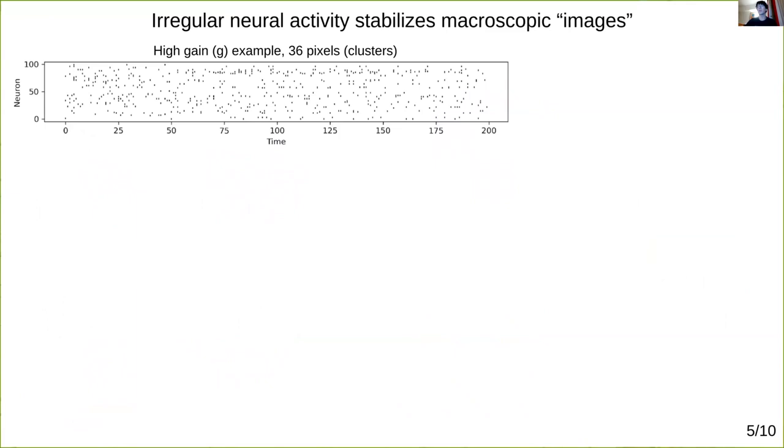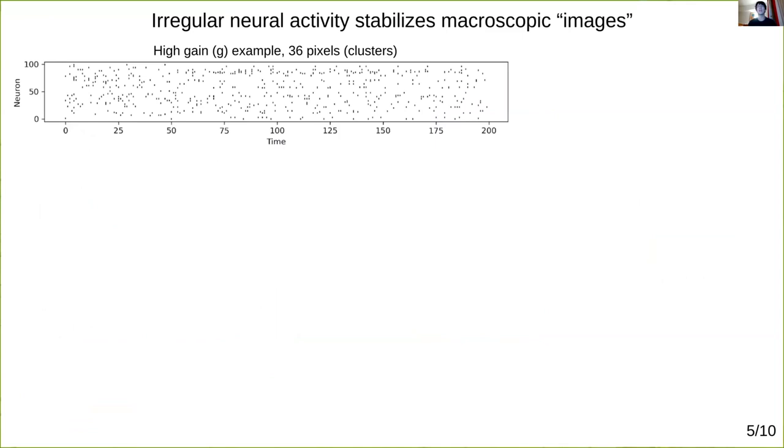I'll discuss parameters shortly, but if we turn on a representative example of such a network, the first thing we see is that when the gain parameter g is high, so that neurons are either on or off, is the familiar irregular neural activity we're after. Individual neurons activate at variable times, and the system does not land at a fixed point or any simple limit cycle.